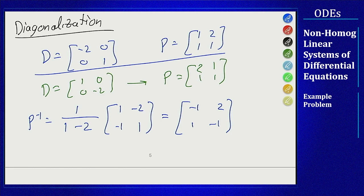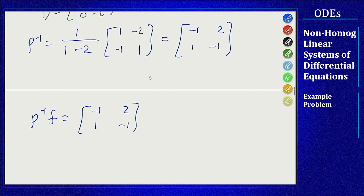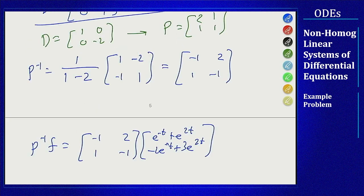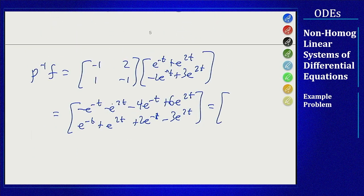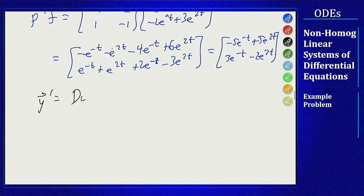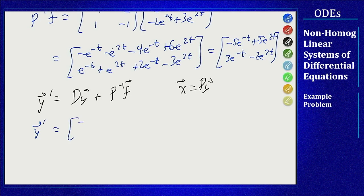Now I need P-inverse times F. Multiplying out gives the vector [-5e^(-t) + 5e^(2t); 3e^(-t) - 2e^(2t)]. The diagonalization method says to solve y' = Dy + P-inverse·F, then recover x = Py. This decouples into two first-order equations: y₁' = -2y₁ - 5e^(-t) + 5e^(2t), and y₂' = y₂ + 3e^(-t) - 2e^(2t).